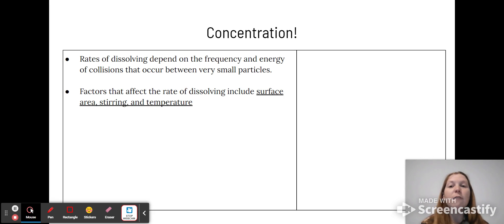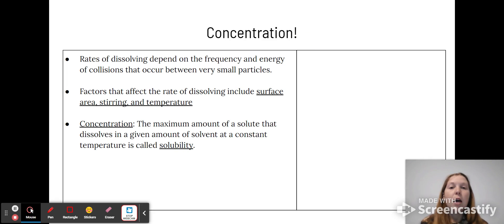Factors that affect the rate of dissolution are surface area, stirring, and temperature. The smaller your particle, the more surface area exposed, the quicker it will dissolve. Stirring allows new particles to come in contact with your solute, so it will dissolve quicker.